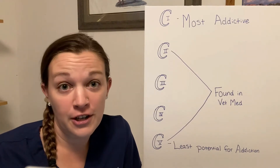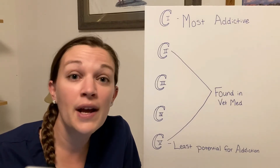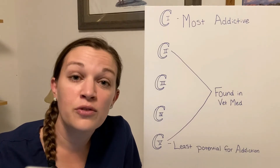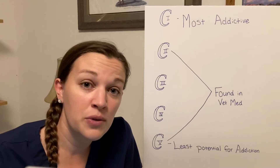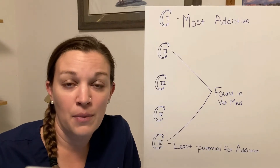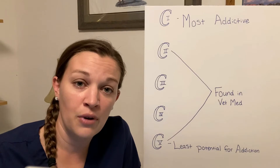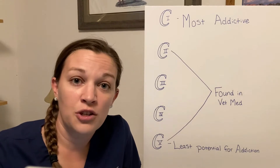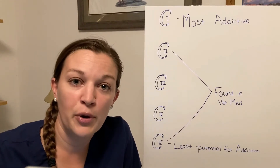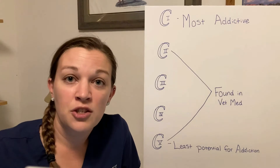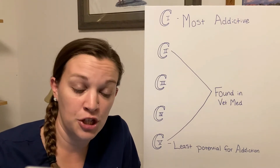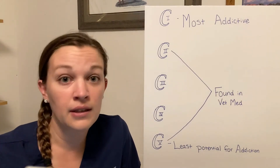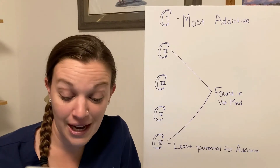I'd like to start out by simply giving a definition. What is a controlled drug? A controlled drug is a drug or a chemical whose manufacturing, possession, and use is regulated by the government. Within practice, there will be logbooks — anytime we get new allotments of that drug into the hospital, that will be added into our logbook, and anytime we administer or dispense it regarding a patient, that will also be written down. That's how we keep track of them for the government as required.